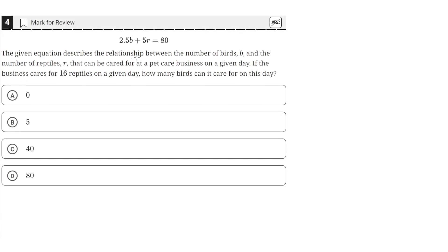The given equation describes the relationship between the number of birds, B, and the number of reptiles, R, that can be cared for at a pet care business on a given day.